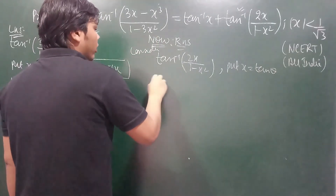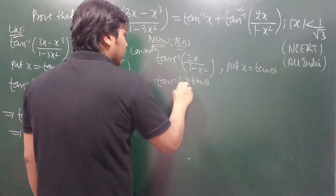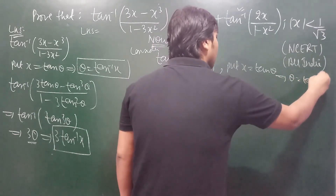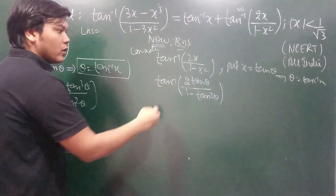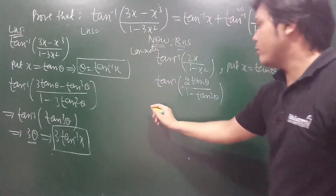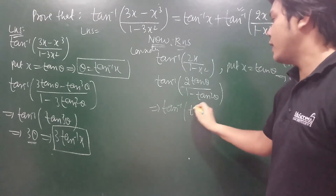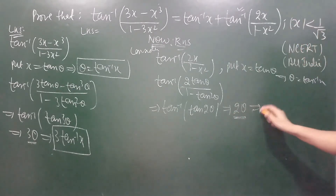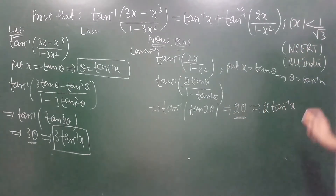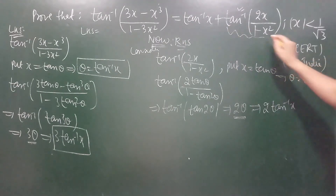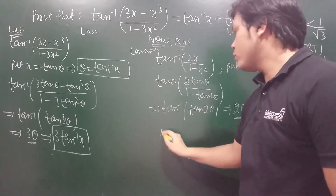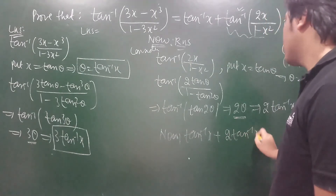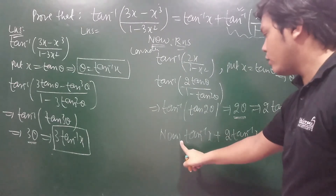Now for the RHS, we have tan inverse of (2 tan theta) upon (1 minus tan square theta). We know this is the formula for tan 2 theta, so this becomes tan inverse of tan 2 theta, which equals 2 theta. Substituting theta = tan inverse x, this gives 2 times tan inverse x.